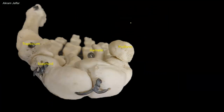The carpal bones are shaped to form a curve directed anteriorly. Only those bones at the sides of the curve come near the surface of the palm of the hand, where they can be palpated. These are the pisiform and the hook of the hamate medially, and the tubercle of the scaphoid and the trapezium laterally.